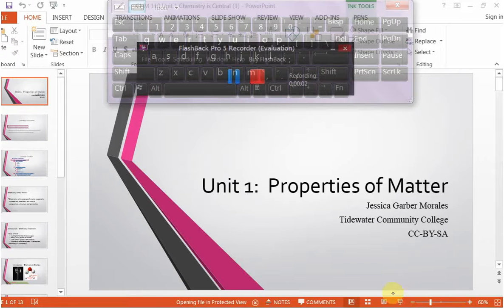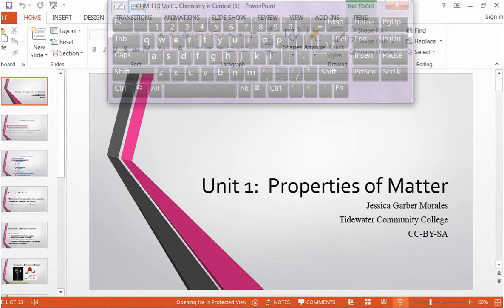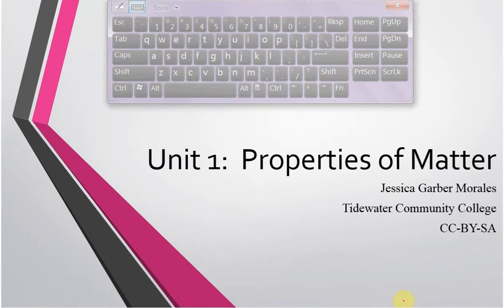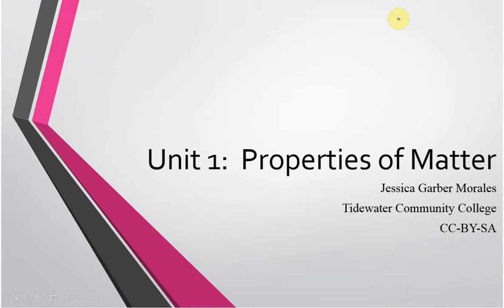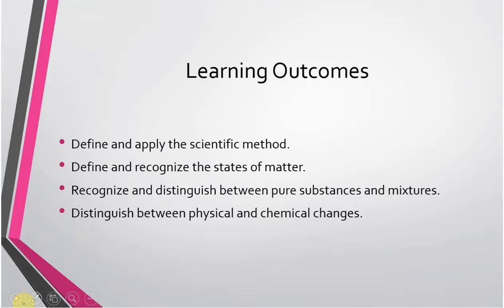Hello everyone, this is the first video on Unit 1 Properties of Matter. We are going to be looking at several things in this unit. This unit is actually more of an introduction than anything else. It is surprisingly nice in terms of content. We are going to be looking at the scientific method and why chemistry is a central science. That is really what we are going to be focusing on in this video.